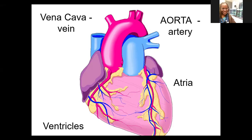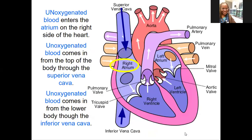The atria are the top chambers and the ventricles are the bottom chambers. We'll be talking about the vena cava and the aorta very soon. When blood comes back from the body, it's all used up of its nutrients and it is unoxygenated. That unoxygenated blood enters the right atrium — you'll see the right atrium circled there in yellow. The superior vena cava at the top and the inferior vena cava at the bottom both drop off that unoxygenated blood into the right atrium.